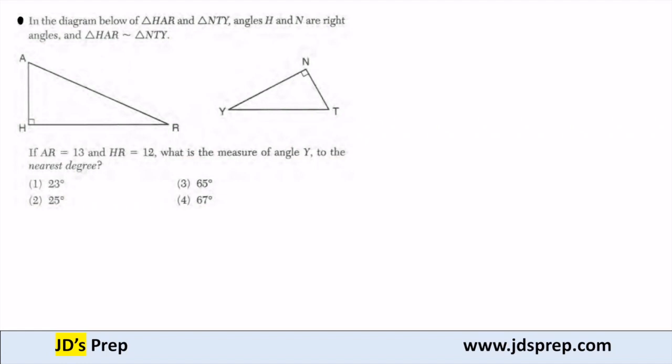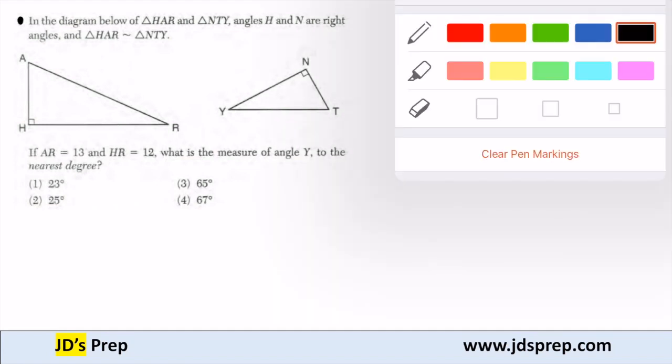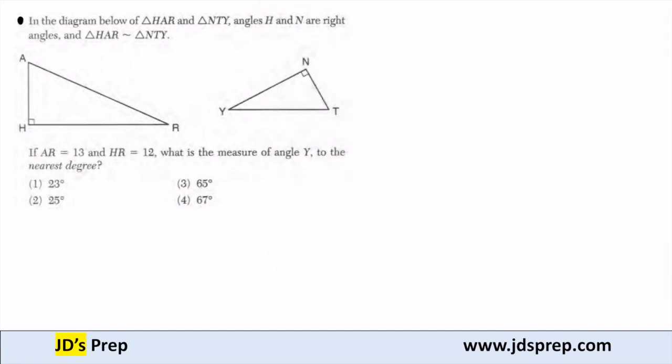So two things that we know: the triangles are similar, and they're right triangles. The first piece of information given is side AR is 13, so let's fill that in. And side HR is 12.